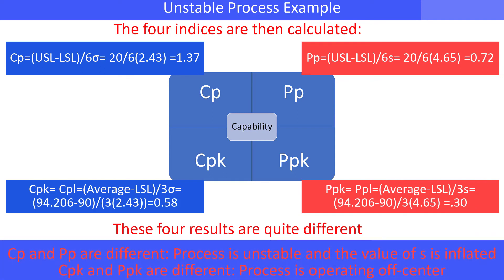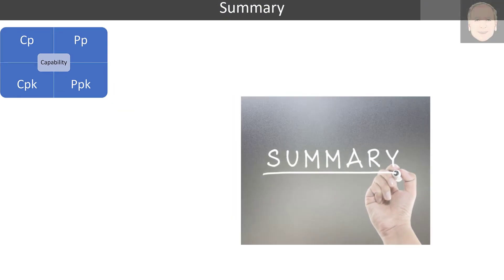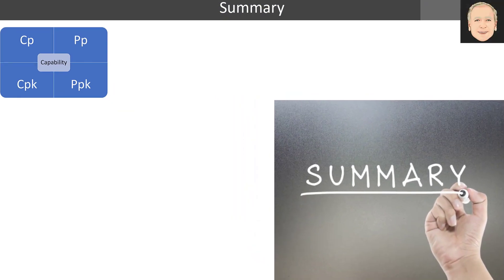Why are the results so different? CP and PP are different because the process is unstable and the value of S is inflated. CPK and PPK are different because the process is not centered.